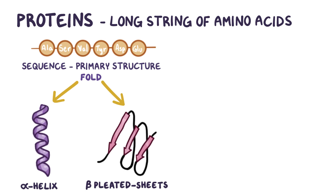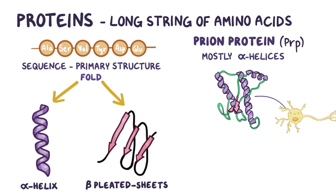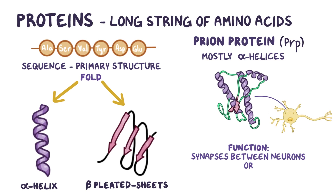There's a protein called prion protein, or PRP, which is encoded by the PRNP gene. This protein is 253 amino acids long and is made up of mostly alpha helices, and is most commonly found in the cell membrane of neurons. Although the function of PRP is unknown, it's thought that it might play a role in synapses between neurons and the uptake of copper into the cell.